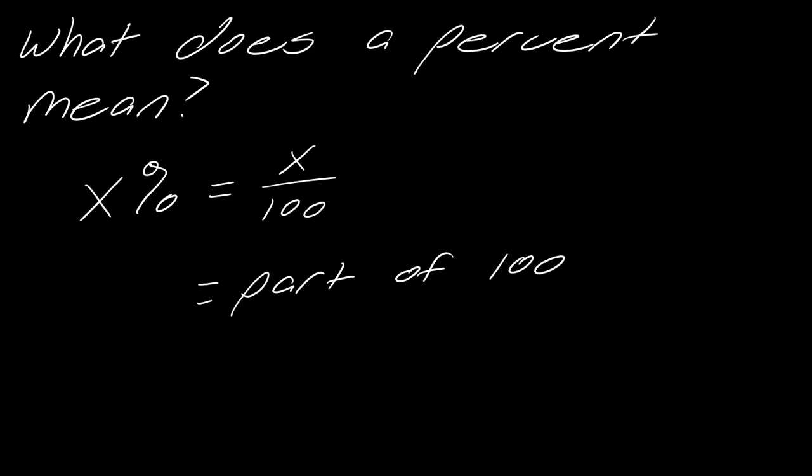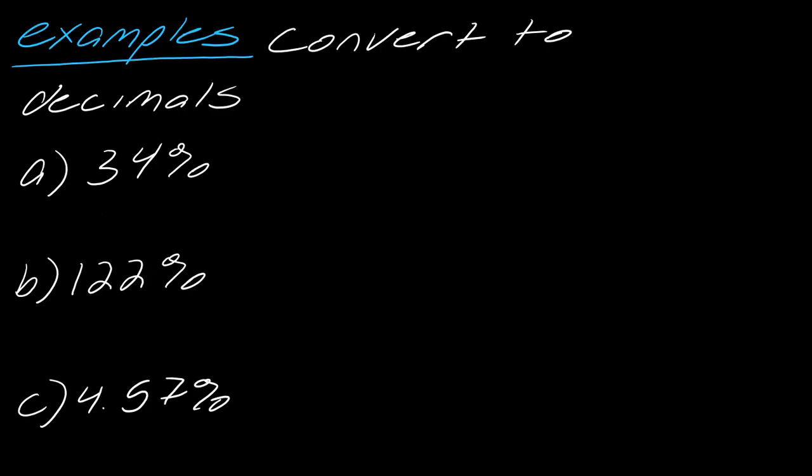The first thing I want to remind you of is how to convert from percents to decimals. I have these examples we're going to jump right into. When you have a percent, you can pick up where the decimal is, and sometimes it might be invisible. Then you just move it to the left to turn it into a decimal. So 34% is equal to 0.34. In the case of 122%, I just move it over 2, so this would be equal to 1.22.